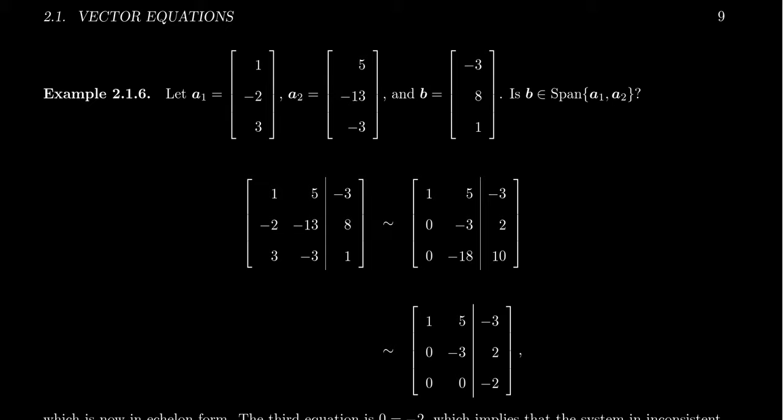Again, we'll work over the real numbers in this situation. We have two vectors. a1, which is given as 1, negative 2, 3. a2 is given as 5, negative 13, and 3. And then b is negative 3, 8, and 1. Is b inside the span of these things? Same basic idea here.